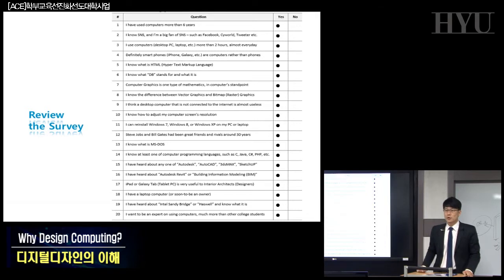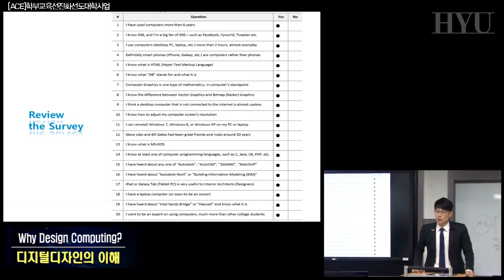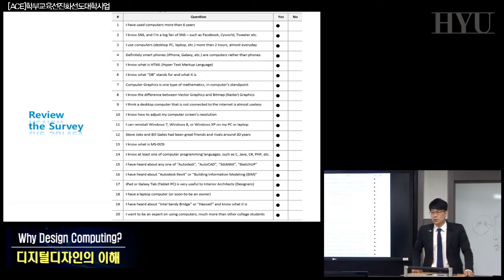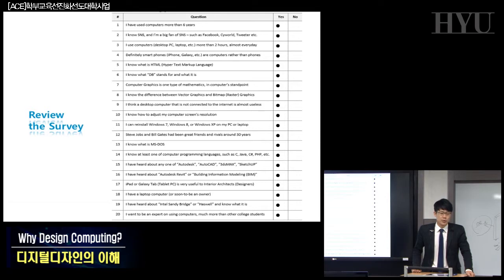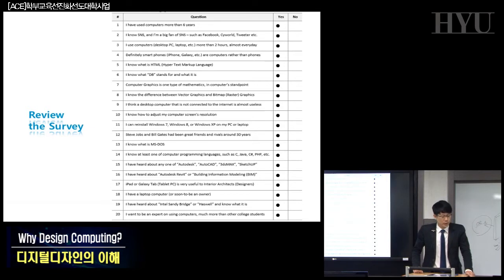The survey had 20 questions. First: I have used computers more than six years. Of course — we are living with computers, including your smartphones, your tablets, or small devices. All have CPUs and some computing hardware surrounding you. Definitely, you are living with computers for many years.